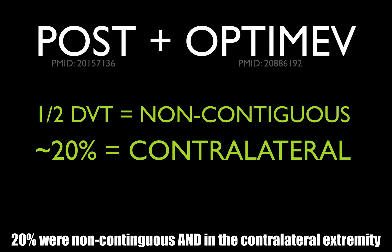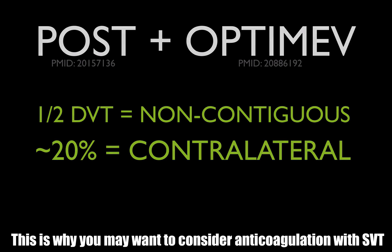So they might have a right-sided greater saphenous vein DVT and then a left-sided femoral vein DVT. These patients with SVTs, especially when they're bigger than 5 centimeters, are pretty high risk for having DVT and should probably be anticoagulated.